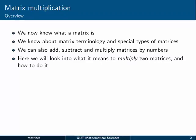Just a quick overview first of all. We now know what a matrix is, that table of numbers with so many rows and so many columns. We know about matrix terminology and special types of matrices like zero and identity matrices. We can also add, subtract, and multiply matrices by numbers. Here we're going to look at what it means to multiply two matrices together and how we actually go about doing that.